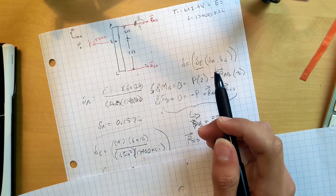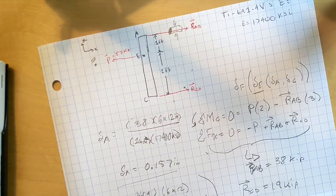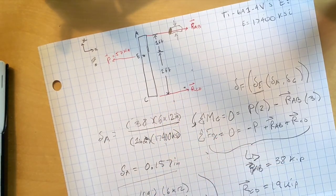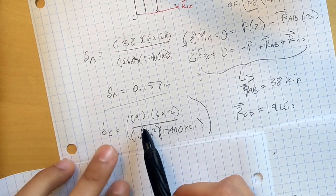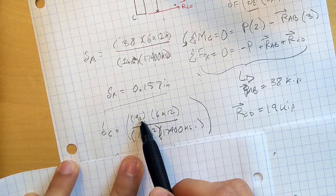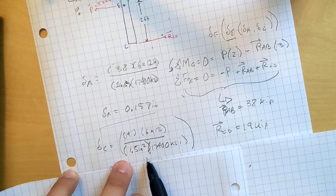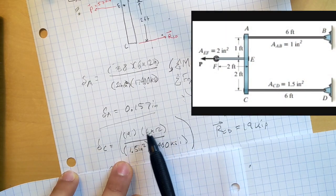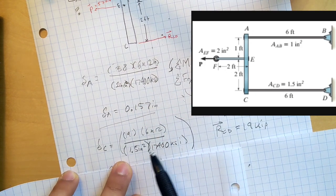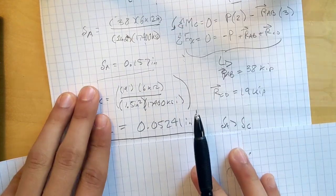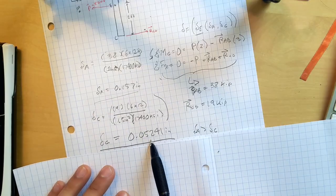Let's do it again for the change in length of bar CD. So we know that P L over A E, the P in this case is 19. And most of the things are the same. It's the same length here. It's the same material, just the thickness is a little bit bigger. So we get a number that looks like this. Bam.